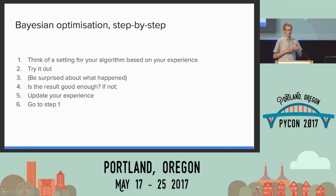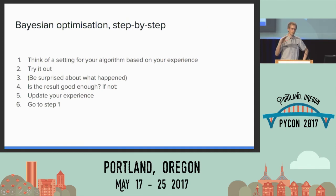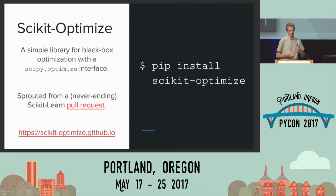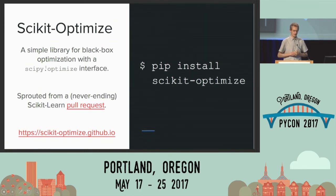Humans aren't very good at doing this in a principled fashion. Mostly what we end up doing is some kind of random walk, and eventually we arrive at something that works. Bayesian Optimization is a bit of maths that helps you follow this kind of recipe and actually get you to the minimum of your function in as few steps as possible. There are lots of open source libraries, mostly by academics, that implement the cutting edge of what is known in this field. We, somewhat frustrated about a never-ending pull request in scikit-learn to implement this, decided we should make a new library in the spirit of scikit-learn — easy to use, well documented, following the scipy.optimize interface. It's called scikit-optimize.